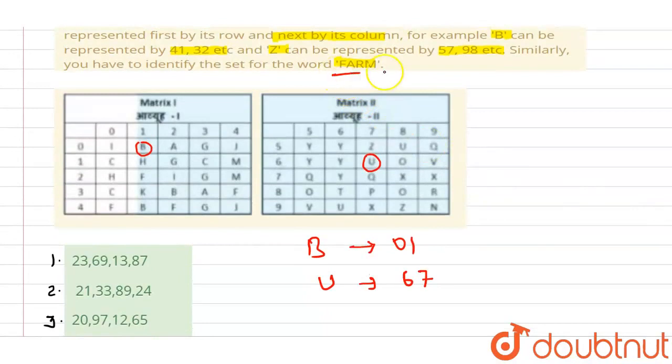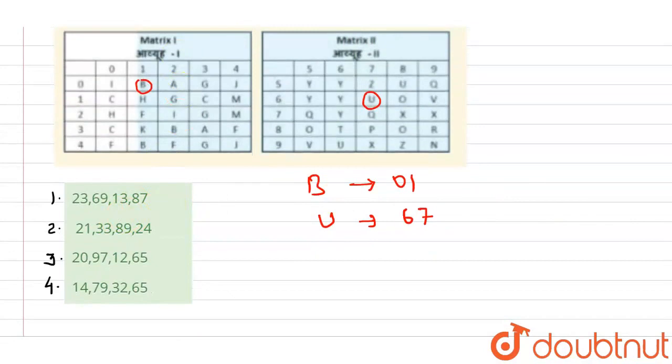I will check first option 23. I will find row 2 and column 3. F is not at 23, it's G. So the first option is incorrect.